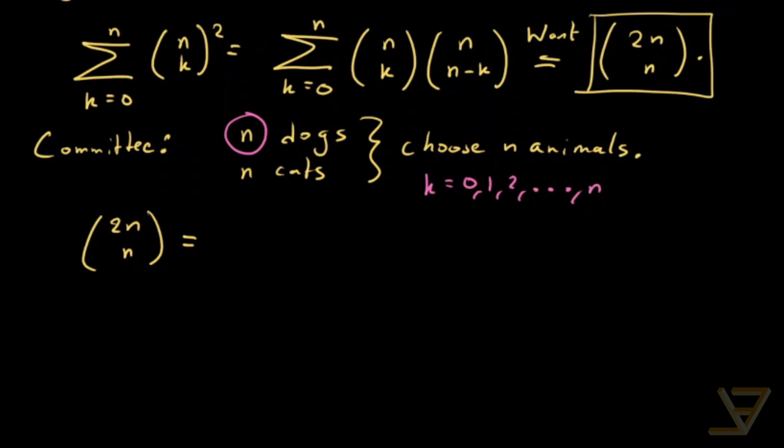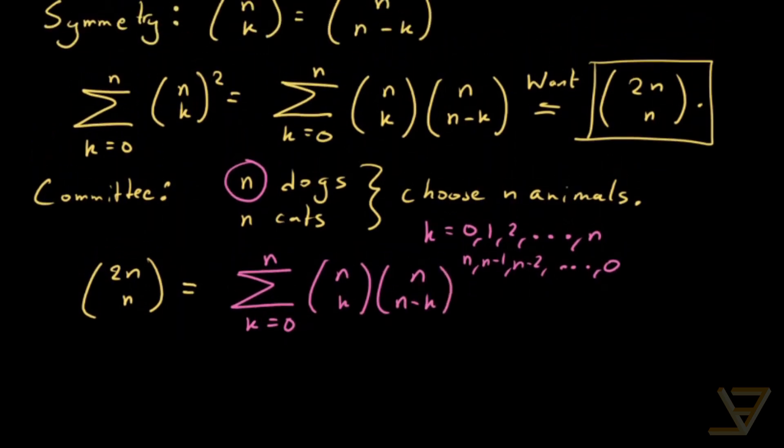And the corresponding number of cats is n, n minus 1, n minus 2 all the way through to 0. So what we get is that it's equal to the sum of k equals 0 through n of n choose k times n choose n minus k. And that proves the identity that we were seeking.